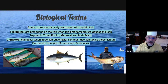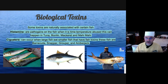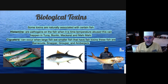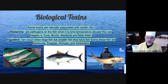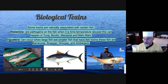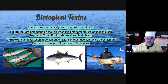Biological toxins: some toxins happen naturally in certain fish. There's one called histamine — the pathogens around the fish are okay as long as they're handled properly, but when they're time and temperature abused, these fish can make you sick. Those fish include tuna, mackerel, and mahi-mahi. There's also ciguatera, which is common with larger fish that eat smaller fish that are infected with fish toxins — such as barracuda, snapper, grouper, and amberjack. Images shown include mahi-mahi, tuna, and amberjack. You don't see many of these often, but when you do, you have to be very careful of fish toxins.